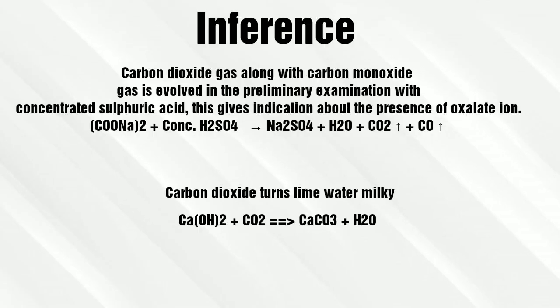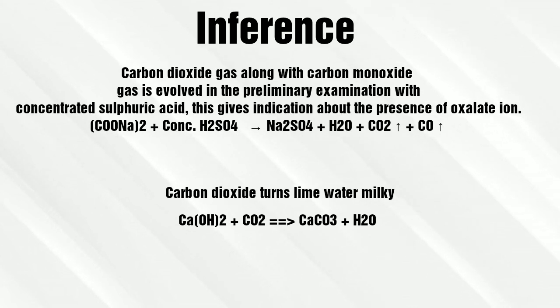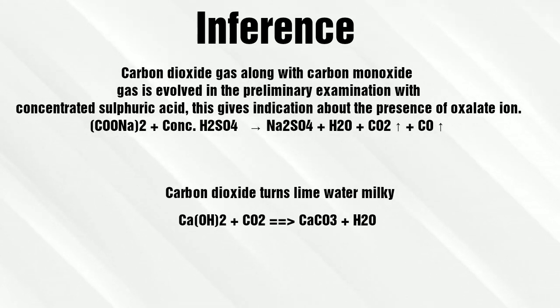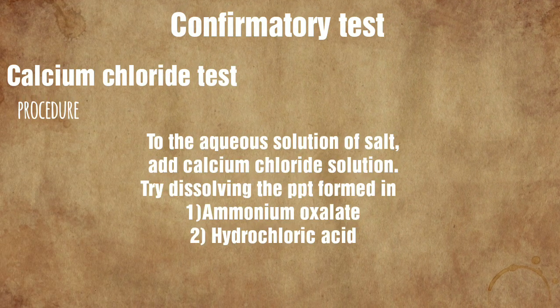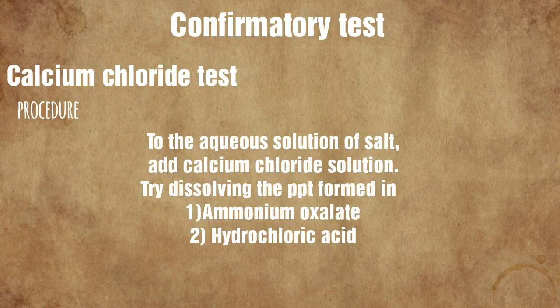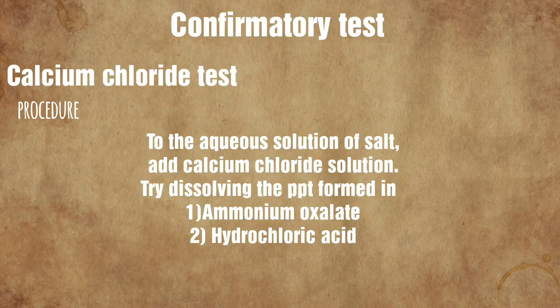Carbon dioxide and carbon monoxide are produced on reaction with concentrated sulfuric acid. Carbon dioxide reacts with calcium hydroxide to produce the milky color of calcium carbonate. Now we proceed to the confirmatory test, which is the calcium chloride test.